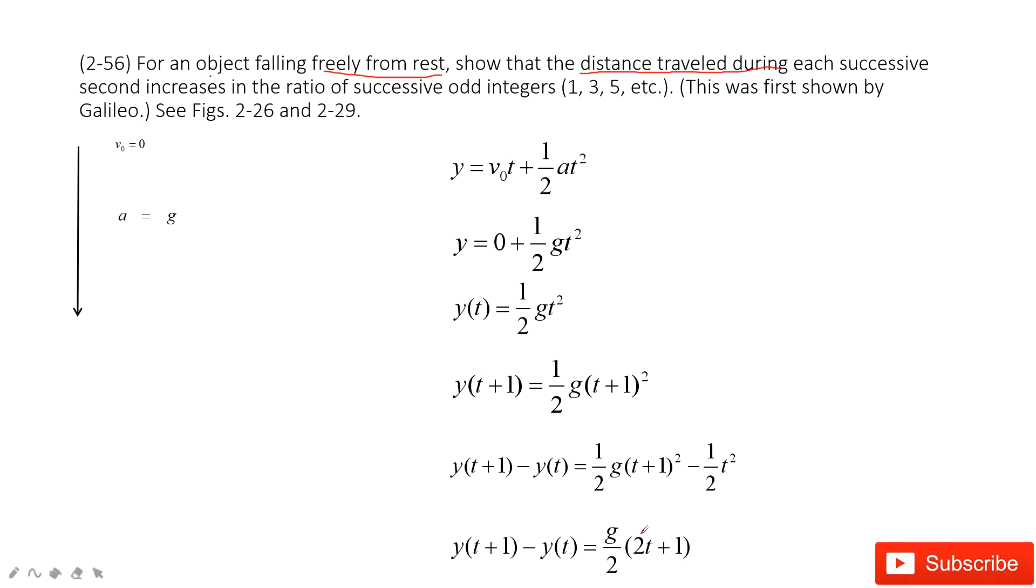Then we look at the 2t plus 1 in this chart. We can see as t equals 0, 2t plus 1 is 1. When t is 1, 2t plus 1 is 3.